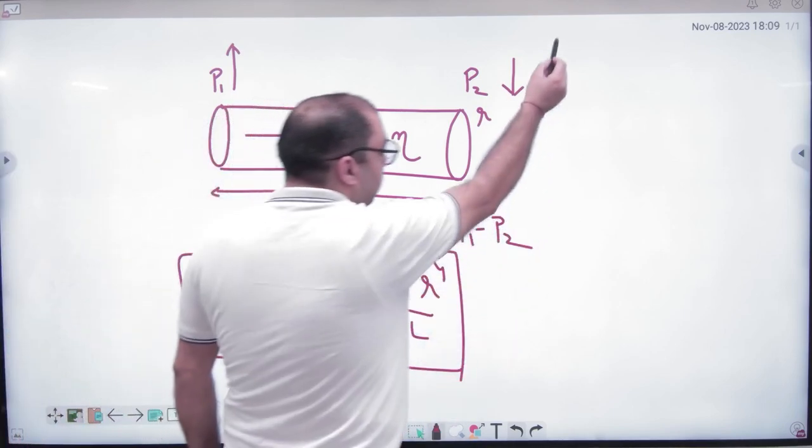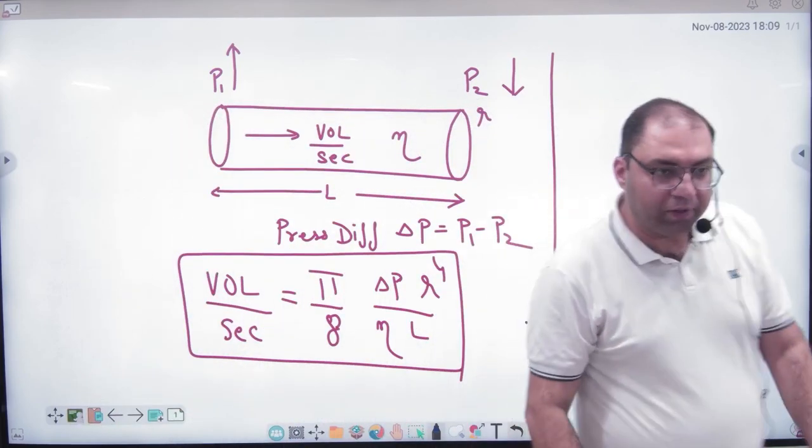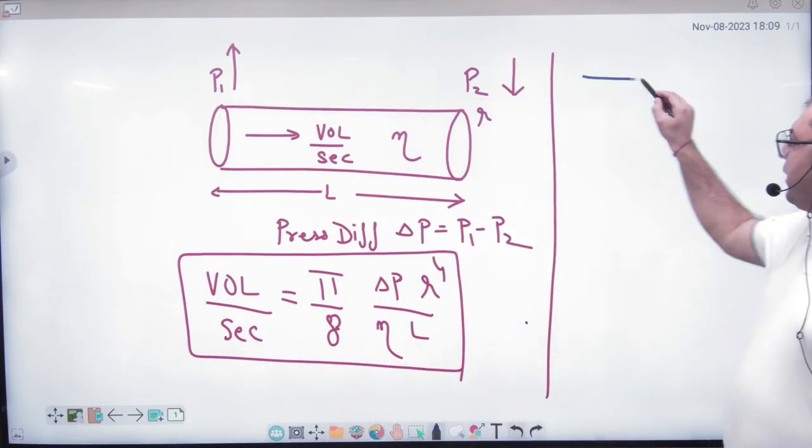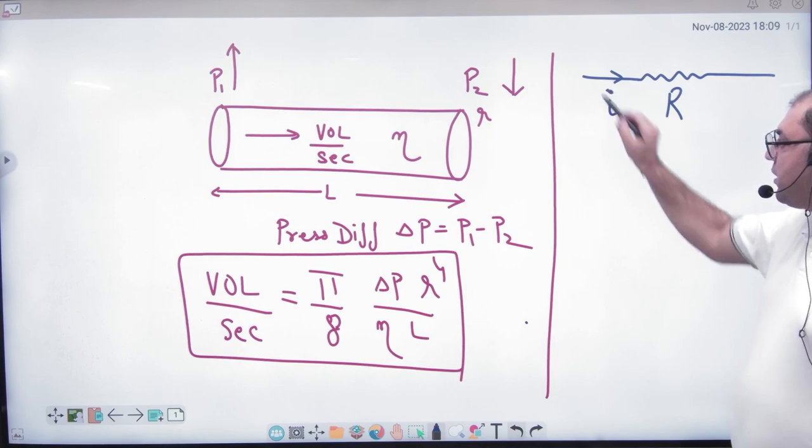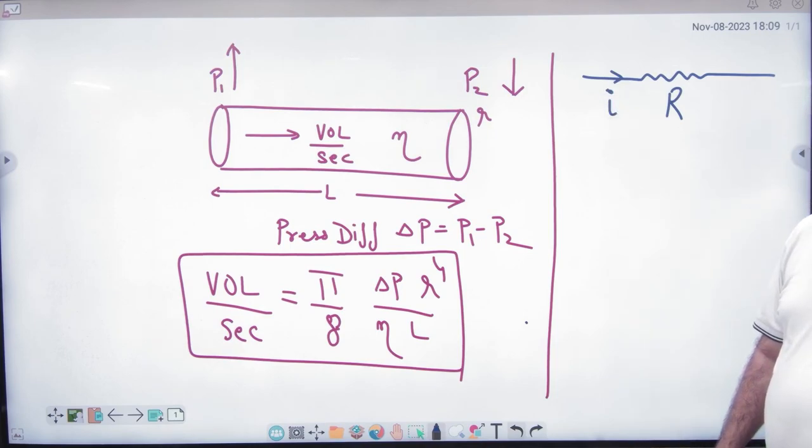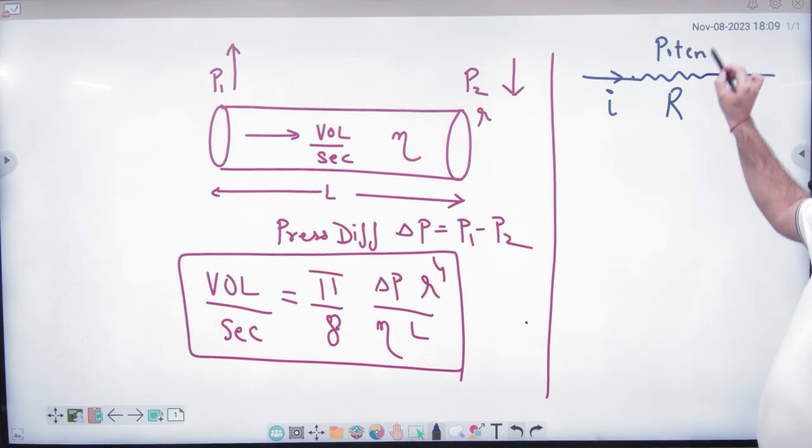If you remember current and electricity, you had a topic in our 10th class. What did we take in current electricity? A wire, which was electrical resistance. What was going on in the wire? Electric current. And what was going on in the wire? Potential difference.